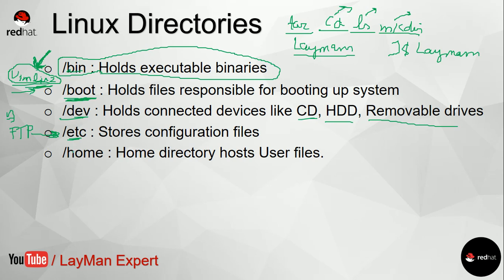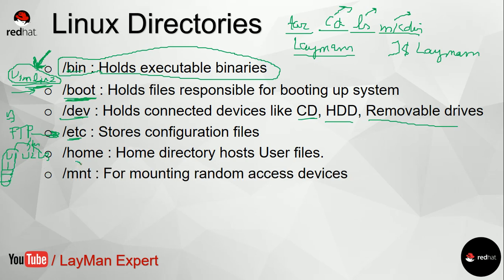The /home directory contains different users' directories. Suppose you have user1, user2, and user3 — all these directories will be inside /home. And in every user's directory there will be folders like Documents, Desktop, and so on. So /home holds the user directories.